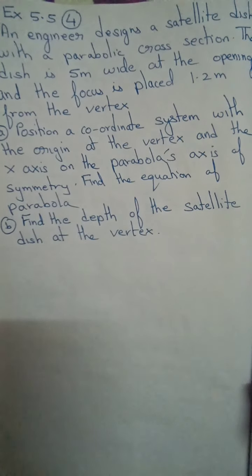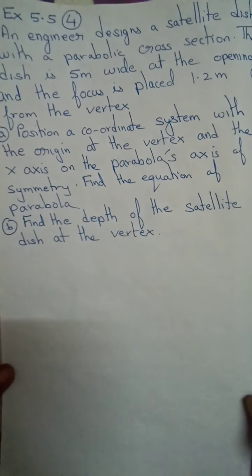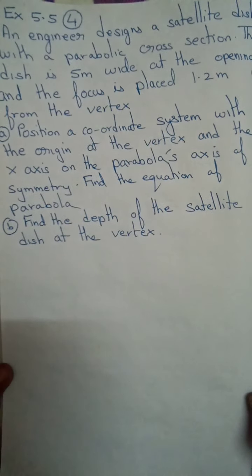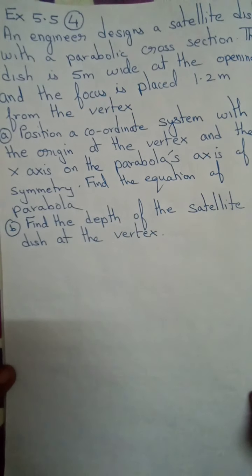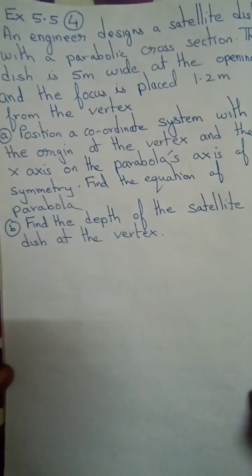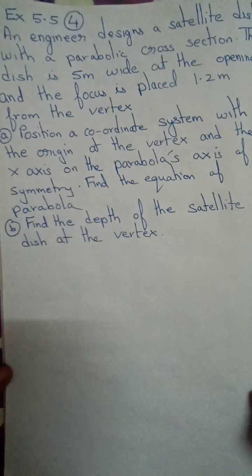Exercise 5.5, fourth sum. An engineer designs a satellite dish with a parabolic cross-section. The dish is 5 meters wide at the opening and the focus is placed 1.2 meters from the vertex. Position a coordinate system with the origin at the vertex and the x-axis as the parabolic axis of symmetry. Find the equation of the parabola. Find the depth of the satellite dish at the vertex.